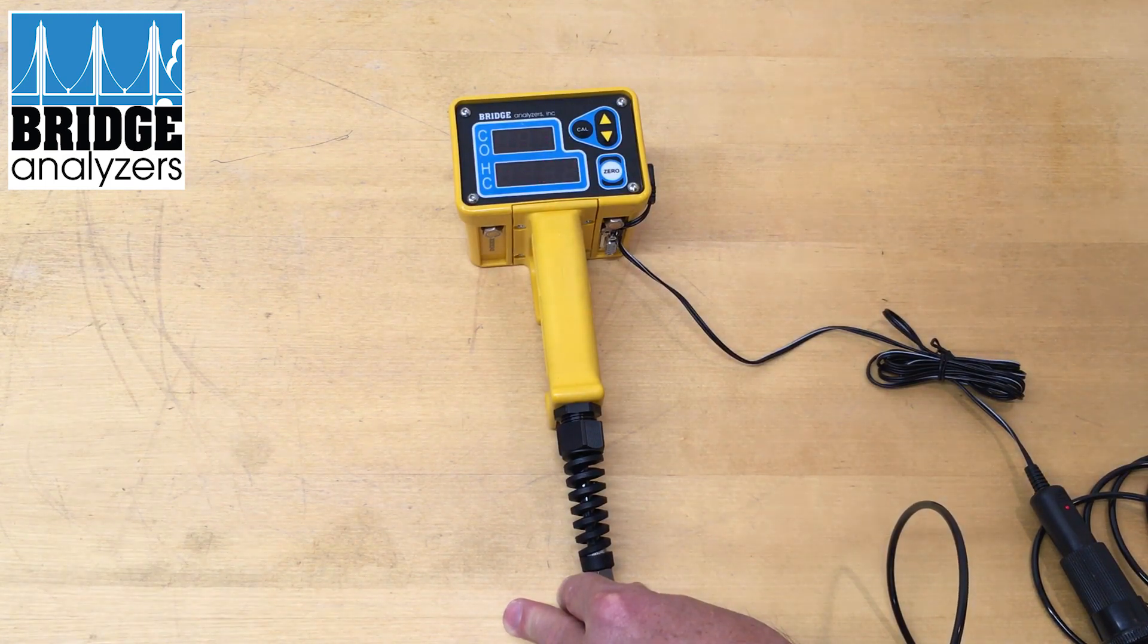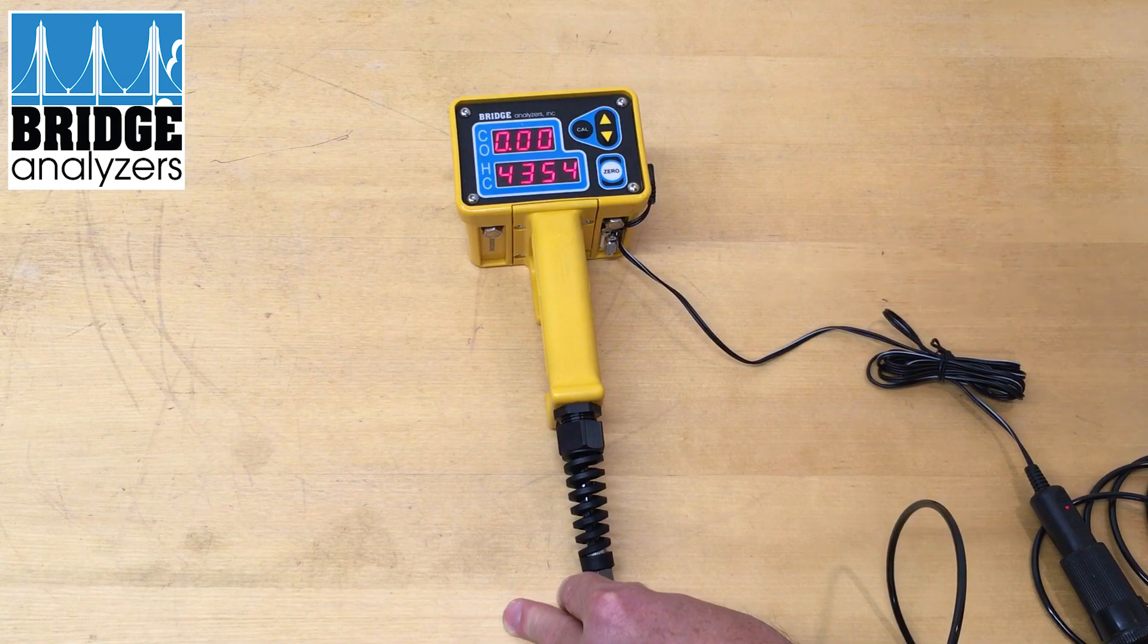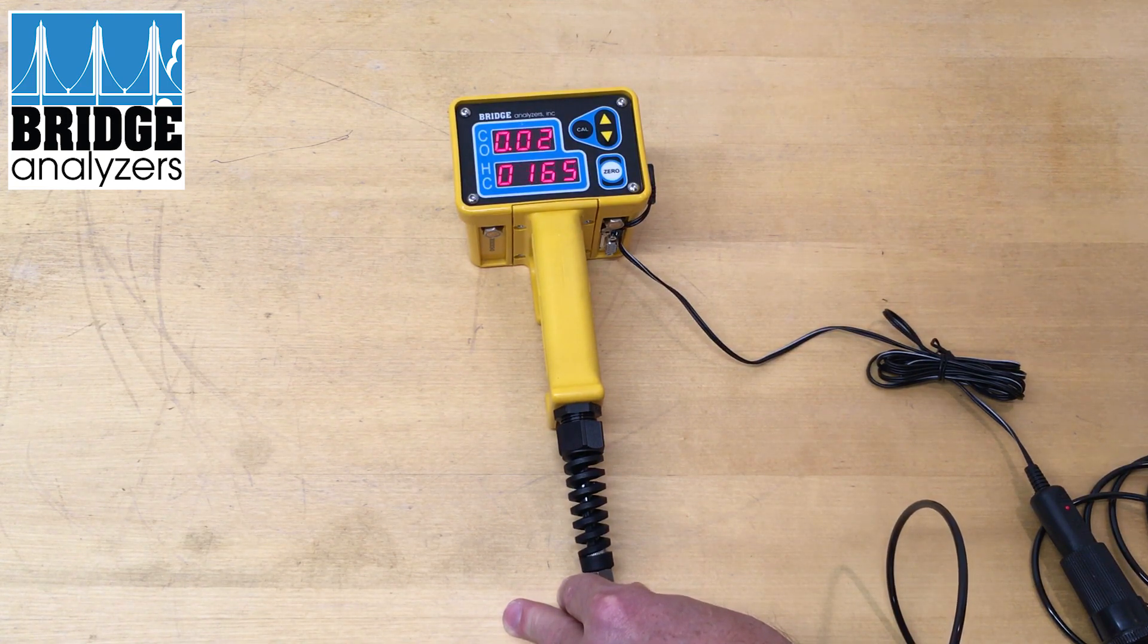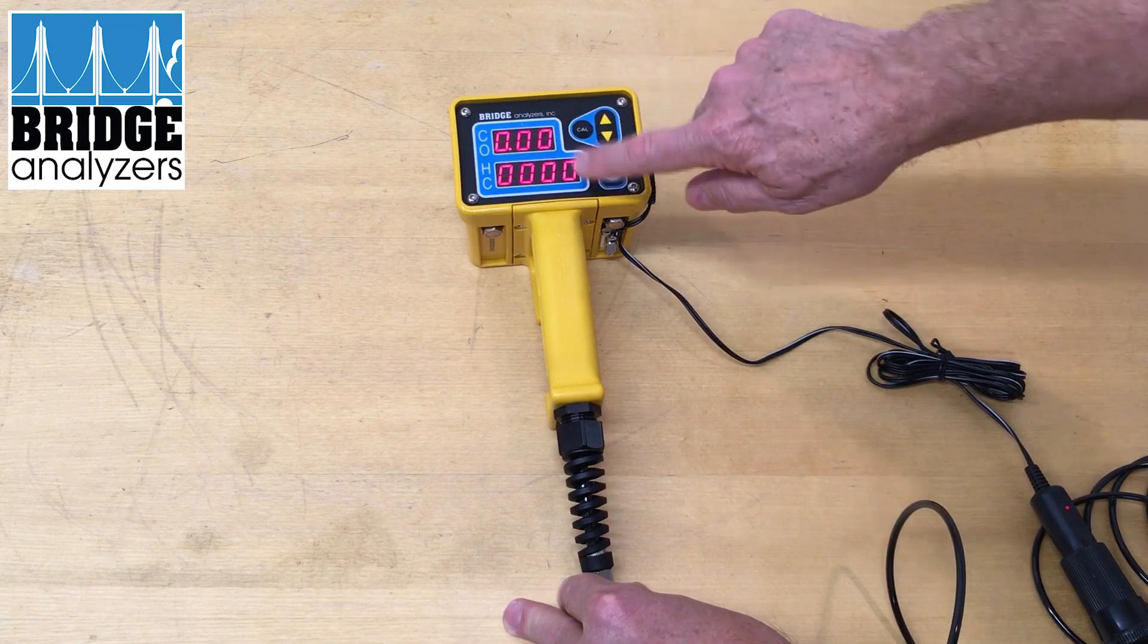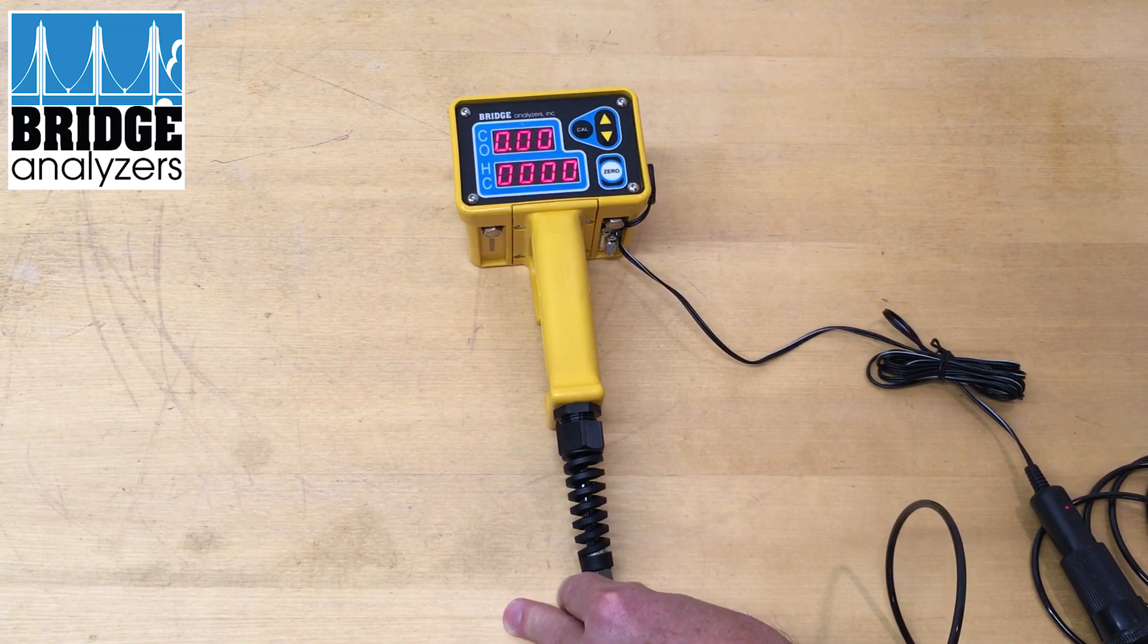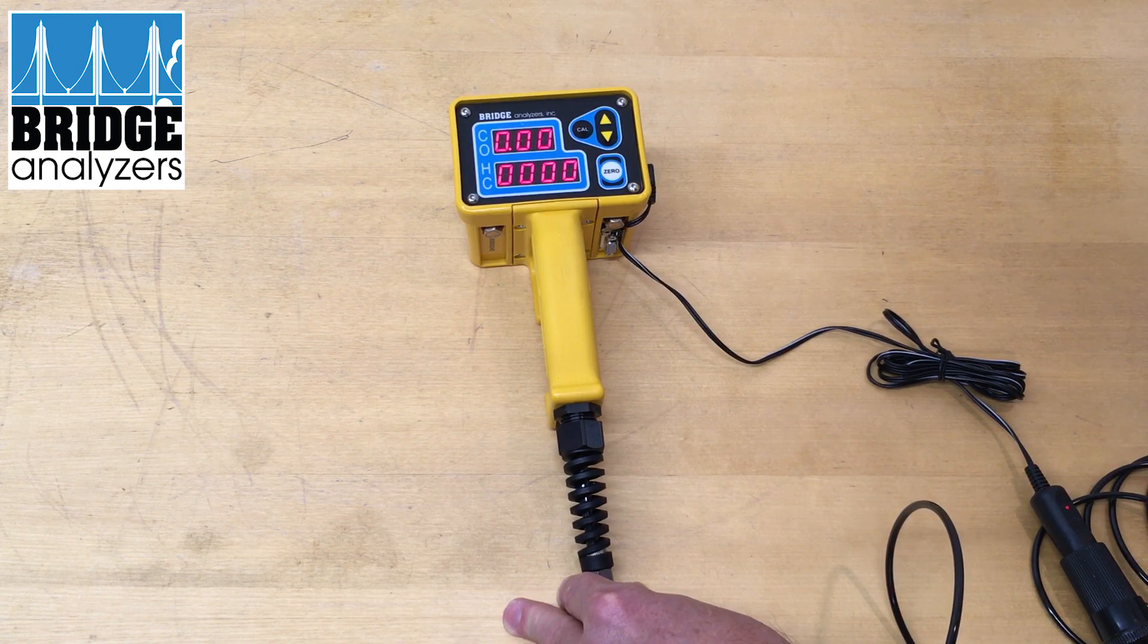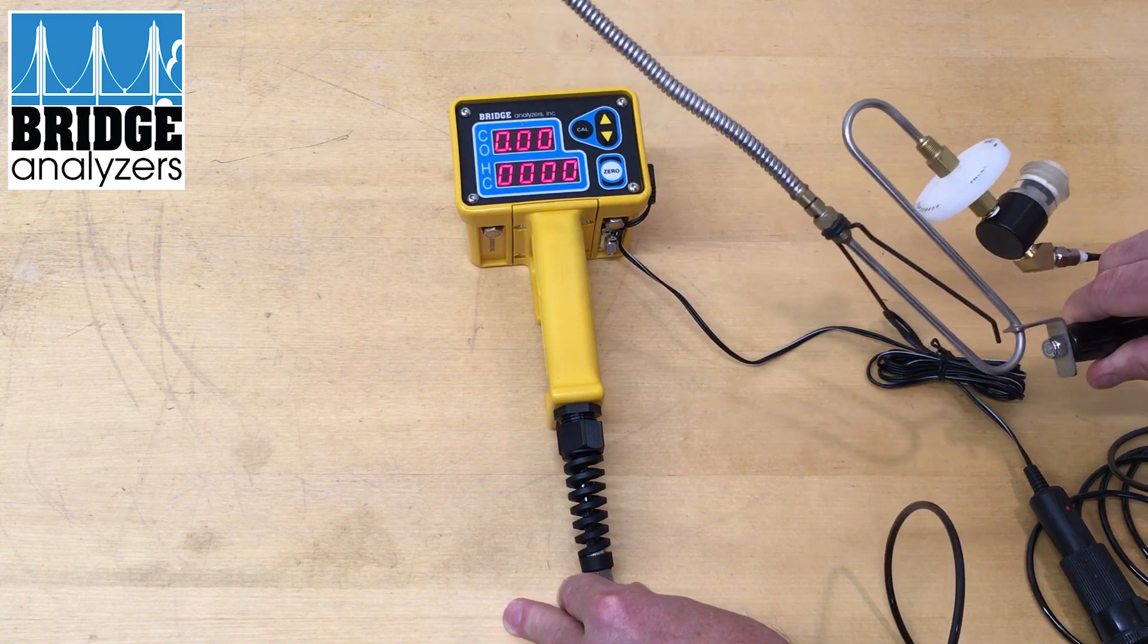Once the zeroing is complete the analyzer will draw gas from the probe. In this case I'm drawing air so I'm reading zeros for hydrocarbon and also carbon monoxide, but I am drawing through this probe.